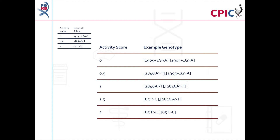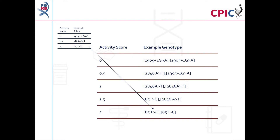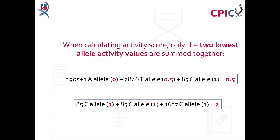For example, if a patient carries two copies of the 1905+1 A allele, then they have an activity score of 0, since each allele has an activity value of 0. If a patient carries one copy of the 1905+1 A allele and one copy of the 2846 T allele, then they have an activity score of 0.5. If a patient carries two copies of the 85 C allele, then they have an activity score of 2.